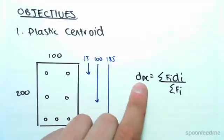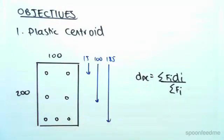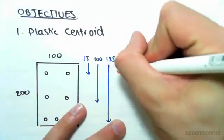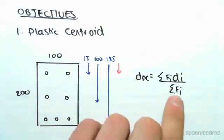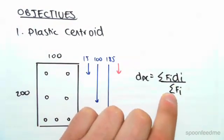So, the plastic centroid, I've given D subscript PC, so the distance from the plastic centroid, and I'm going from the top of our section, so that way, is given by the sum of the forces times the distance of the force over the sum of all the forces.